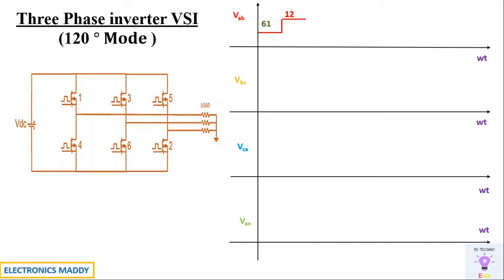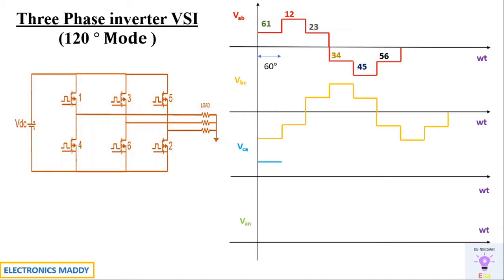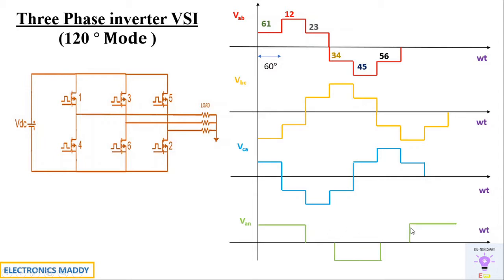So these are the waveforms. The pattern of switching is like this: 6-1 will be initially triggered, 1-2 will be triggered, 2-3 will be triggered, 3-4 will be triggered, 4-5 will be triggered, and 5-6 will be triggered. The triggering pattern changes for every 60 degrees. These are the line voltages across VAB, VBC, and VCA that are respectively obtained. These are the phase voltages. The phase voltage is a quasi square wave, whereas the line voltage is a stepped waveform.